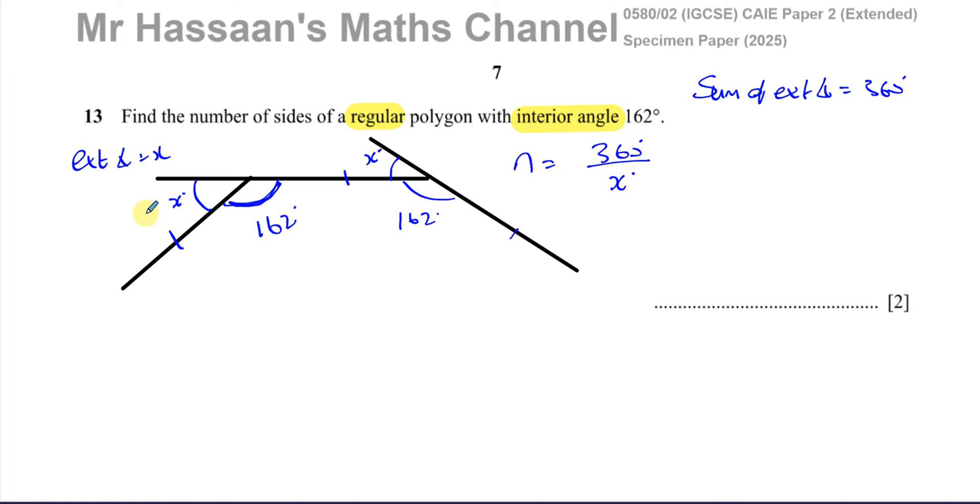For example, n times x is going to be 360. The number of angles times the size of each angle has to give you 360. So that means the number of sides is 360 over x. Now, what is the size of x?